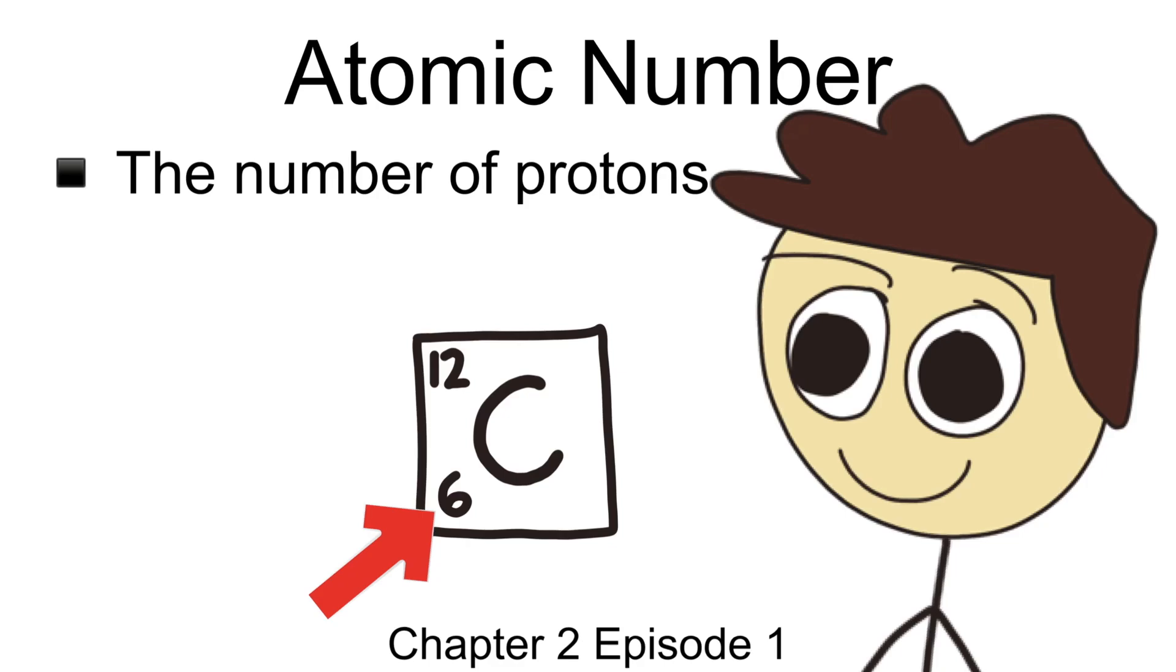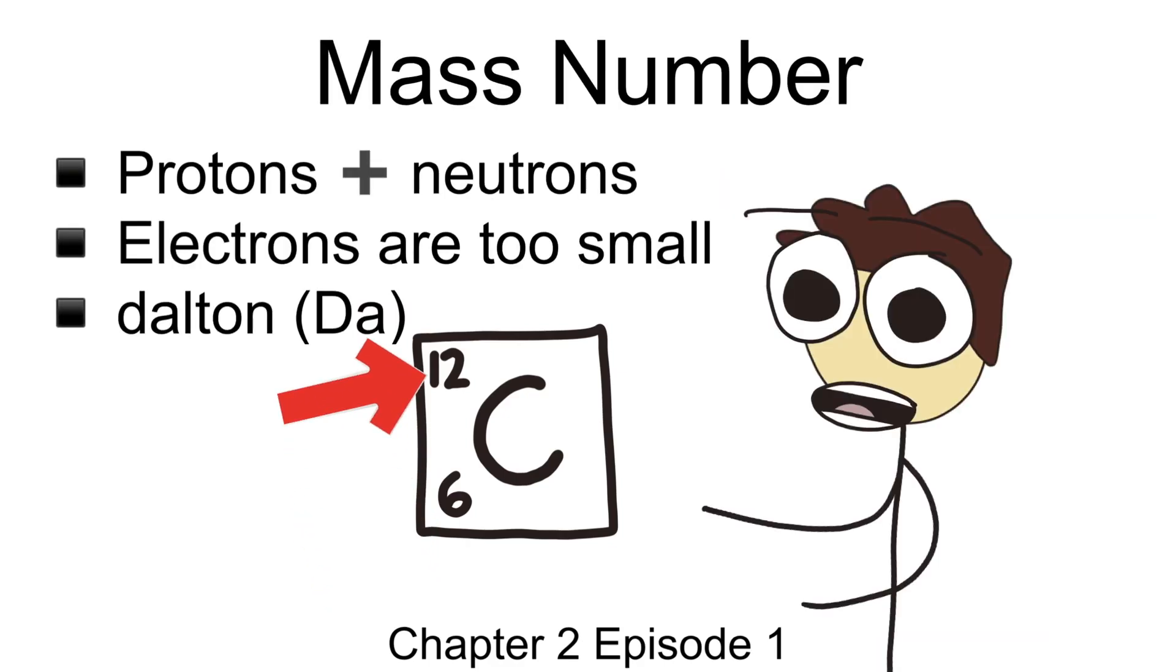Right above the atomic number is a number known as the mass number. The mass number is actually the combined total between protons and neutrons. Generally, you can tell here that the top number is almost always bigger than the bottom number. If it helps, just try to imagine the word mass as related to how much something weighs. Weight is usually a combined total of several different parts. Namely, in this situation, we are talking about protons and neutrons.